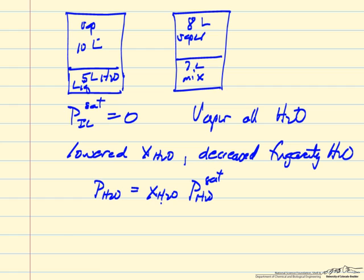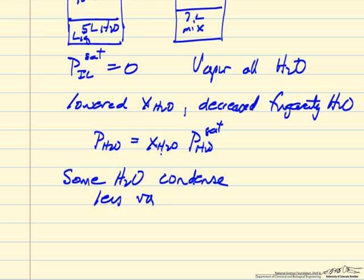So therefore, some water must condense. Now this happens really for two reasons. One, we have less vapor volume, so even if the partial pressure of water, or in this case the pressure of water, stayed constant, the decreased volume of the vapor means that some would condense.